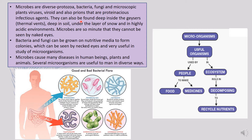Microbes can be found deep in the soil, under layers of snow, and in highly acidic environments. They are found in every type of environmental condition — high temperatures, extreme cold, and acidic environments. We have seen thermoacidophiles, halophiles, and other archaebacteria classified on the basis of their growth conditions. Microbes are so minute that they cannot be seen by the naked eye, which is why we need a microscope to visualize them.